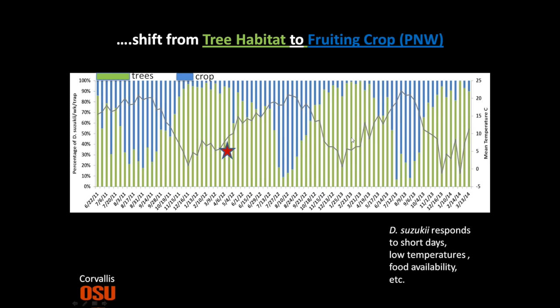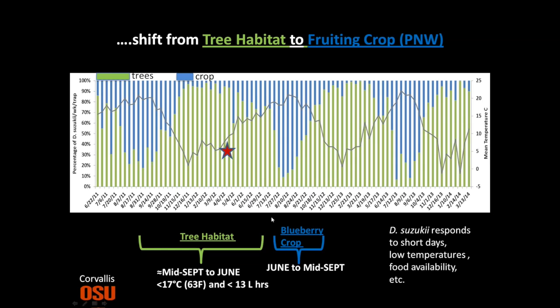Smart little guys. We're trying to identify those points — at least in Corvallis, Albany, Benton, and Lynn Lane — of when they're in the trees versus in the crop, and trying to exploit that information.